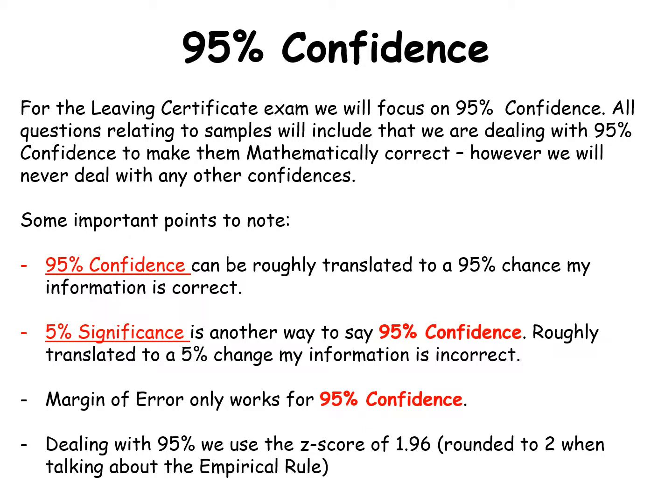The margin of error that we looked at only works for 95% confidence. Dealing with 95% we use a Z score of 1.96, which we would talk about as rounding to 2 with regards to the empirical rule. But we are a lot more accurate now — we're actually going to 1.96.